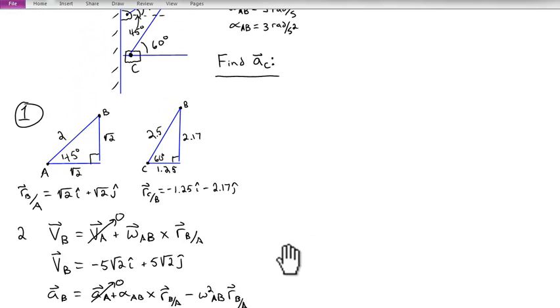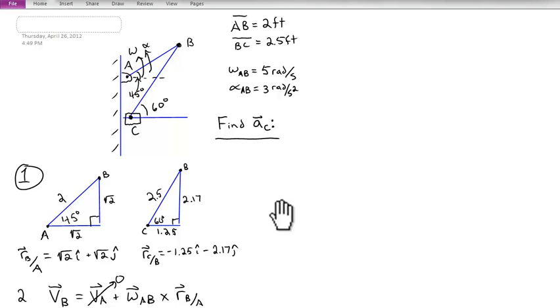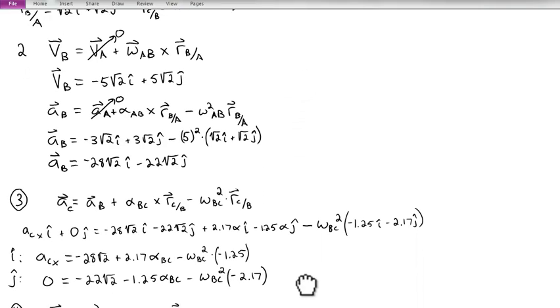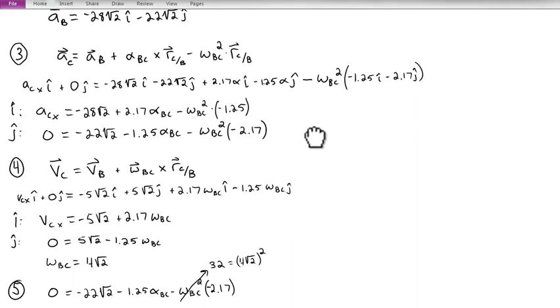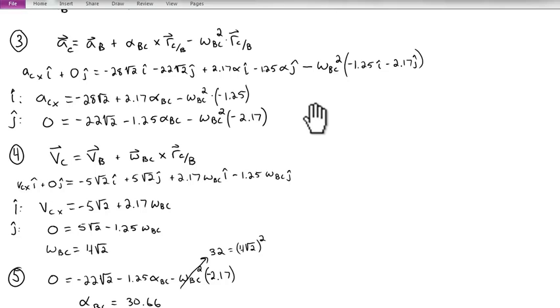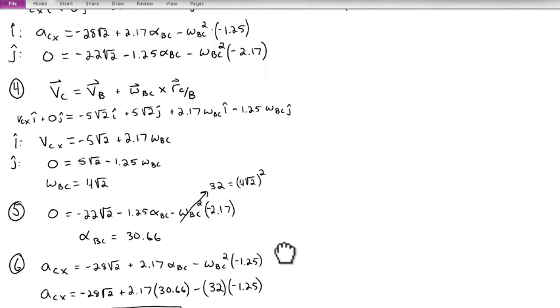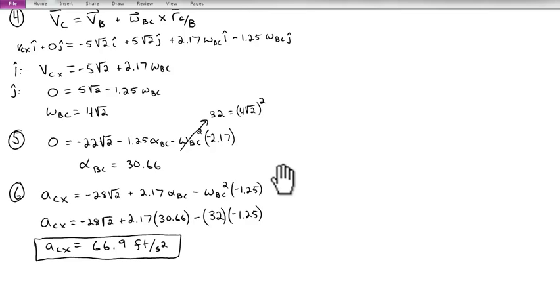Once we knew the acceleration and the velocity at B, and with the knowledge that C only moved in the X direction, we were able to use the relative acceleration and relative velocity equations between point C and B to solve for omega_BC, alpha_BC, and then the acceleration of C in the X direction.